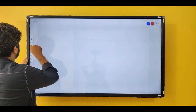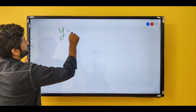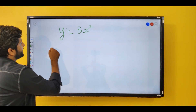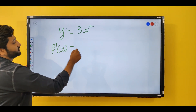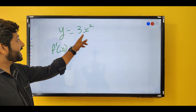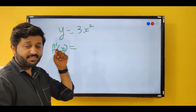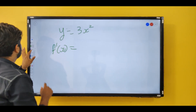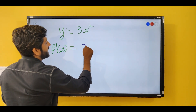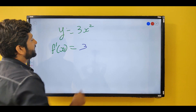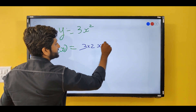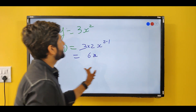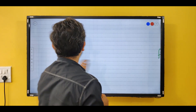Let's take an example: y = 3x². We want to find dy/dx. Using the formula, the power comes in front of x: dy/dx = 3 · 2 · x^(2-1) = 6x.